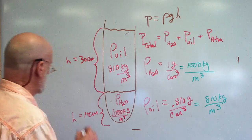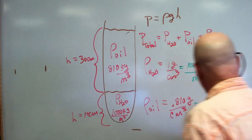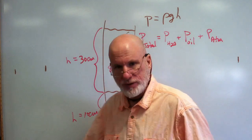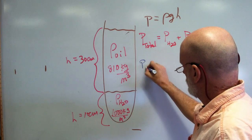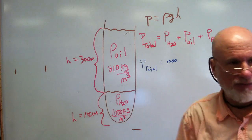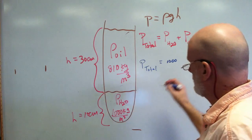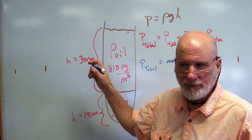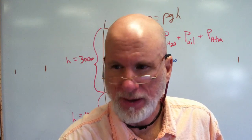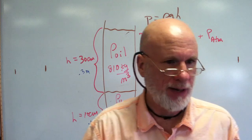Writing this in using blue. Total pressure equals the sum of the components. Make sure everything is in meters and kilograms and seconds. Converting: 30 centimeters is 0.3 meters, and 10 centimeters is 0.1 meters.